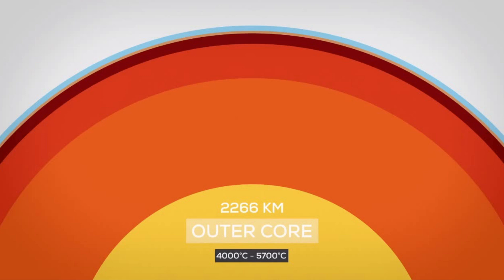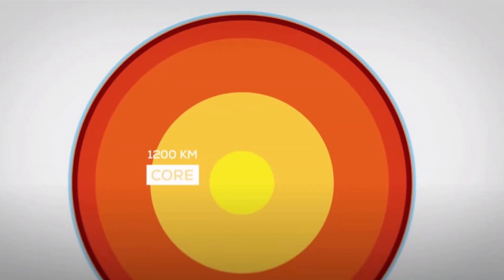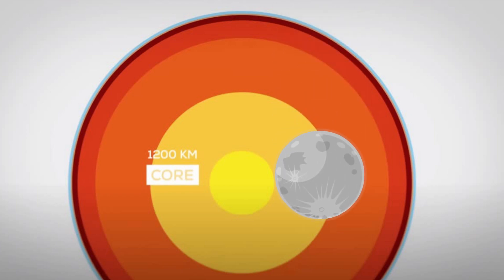Earth's outer core is a liquid layer of iron and nickel, about 2,266 kilometers thick. The temperatures vary from 4,000 to 5,500 degrees Celsius. In the center is the inner core — mostly solid, a ball made of an iron-nickel alloy with a radius of about 1,200 kilometers, 70 percent of the size of the Moon, and at about the temperature of the surface of the sun.